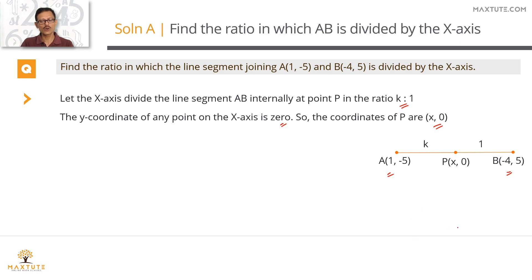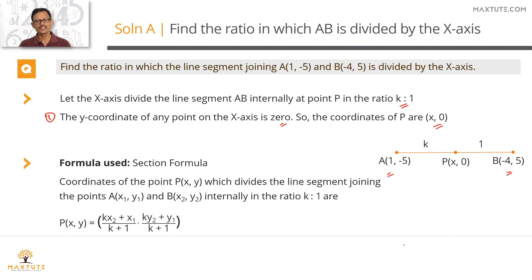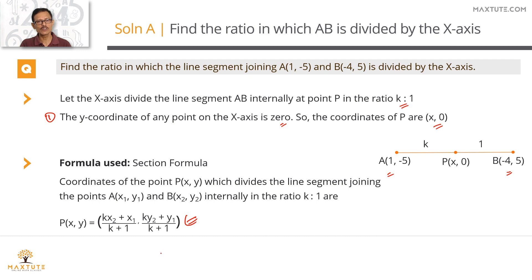As we start the question, we already know the y-coordinate of point P. The second concept we need to know is the section formula. Point P divides this line segment in the ratio k is to 1, so the x-coordinate of point P is (k·x₂ + x₁) / (k + 1), and the y-coordinate of point P is (k·y₂ + y₁) / (k + 1).